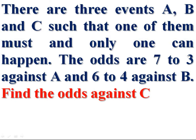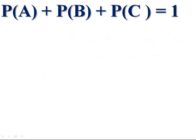In the question we are given that the peculiarity of these three events is that one of them must and only one can happen. The three events are A, B and C. Therefore, P of A plus P of B plus P of C is equal to 1.